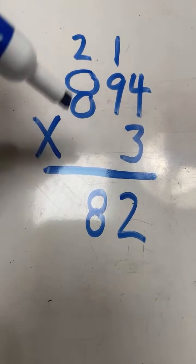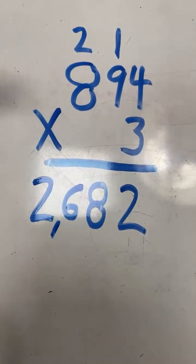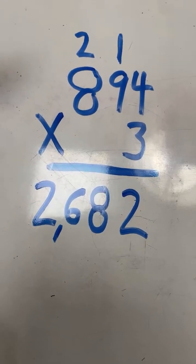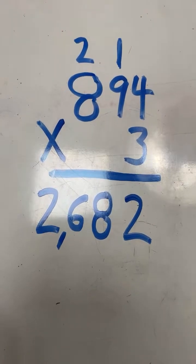8 times 3 equals 24 plus 2 equals 26. And we have our final answer. 894 times 3 equals 2,682.